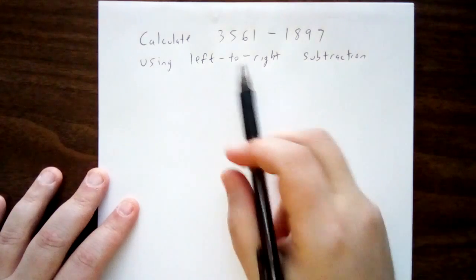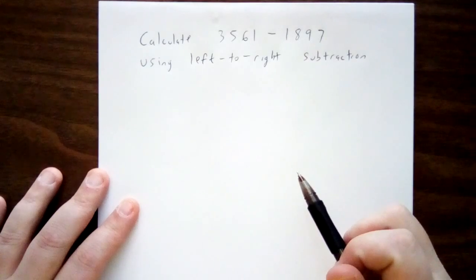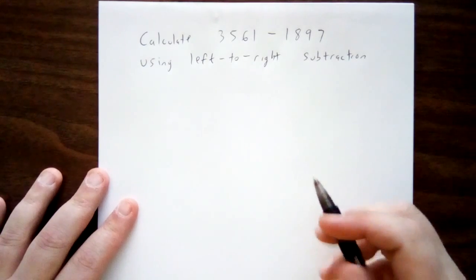In this video, I'll be calculating 3,561 minus 1,897, and I'll be doing it using left-to-right subtraction.